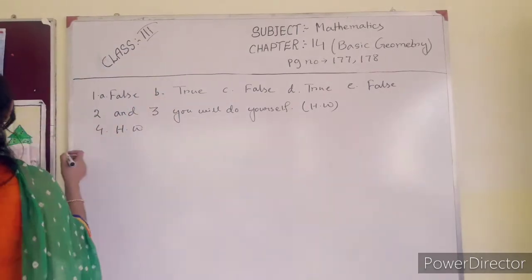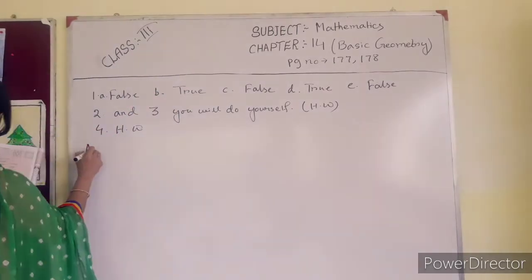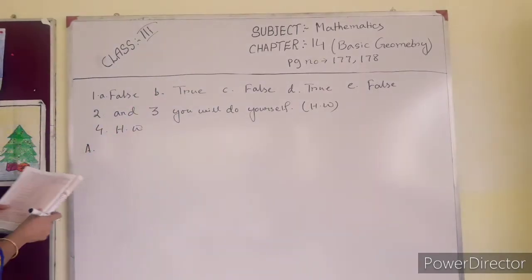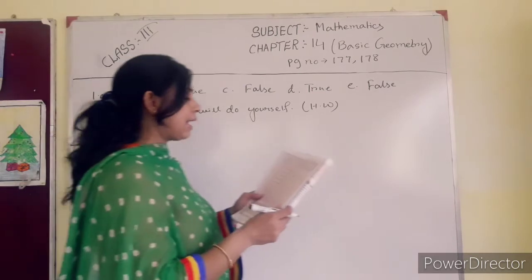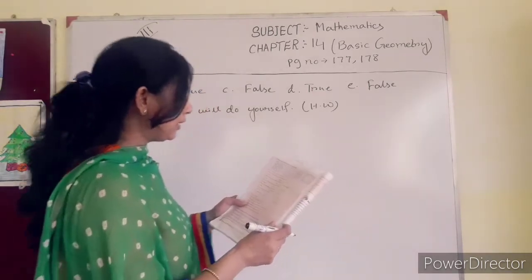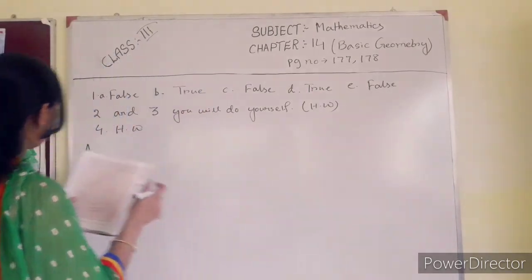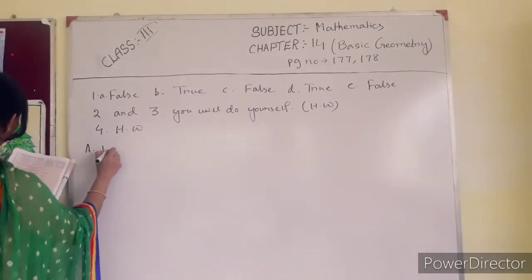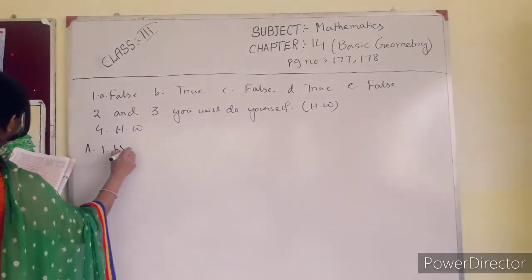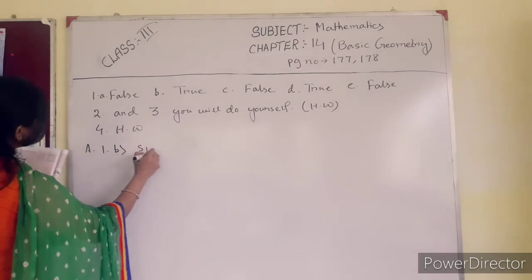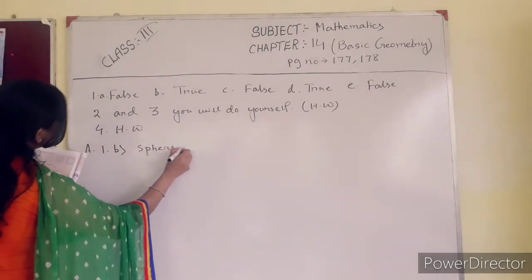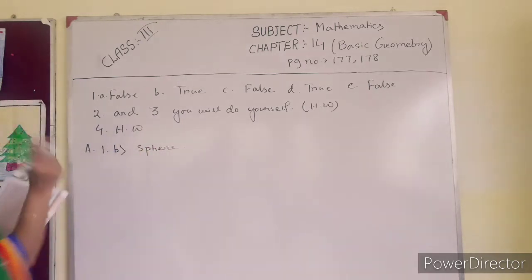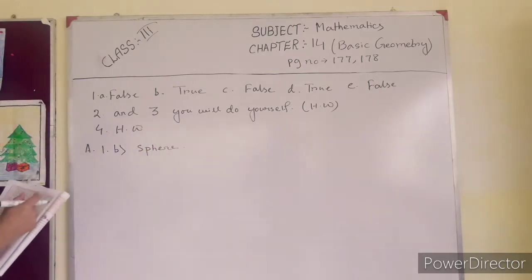Number 8: which of the following solid shapes has no vertex? The answer is B — a sphere has no vertex, because a sphere is a round shape.